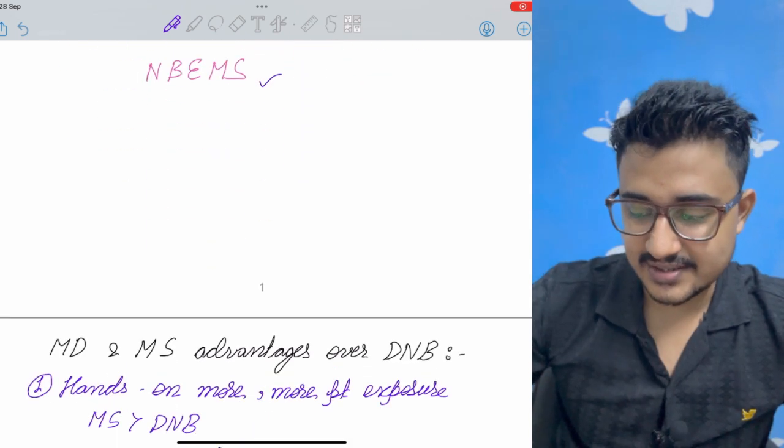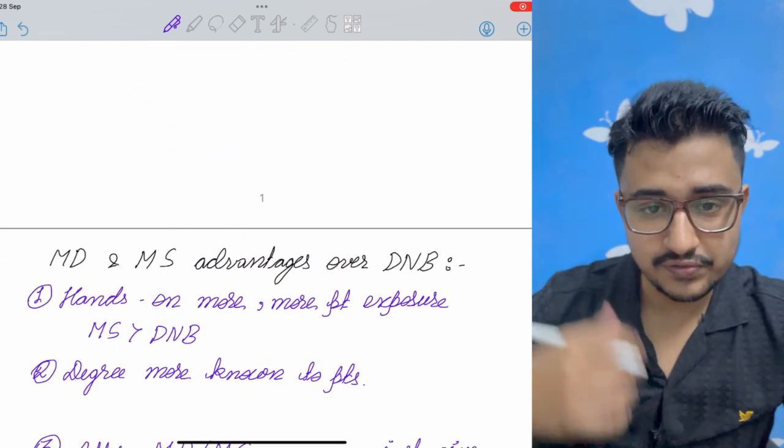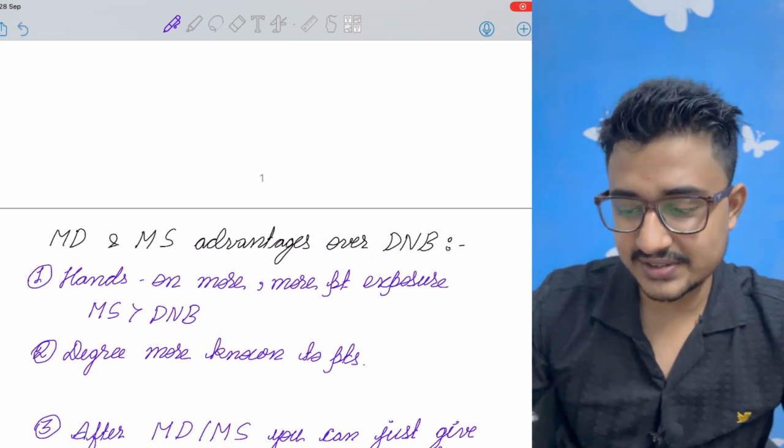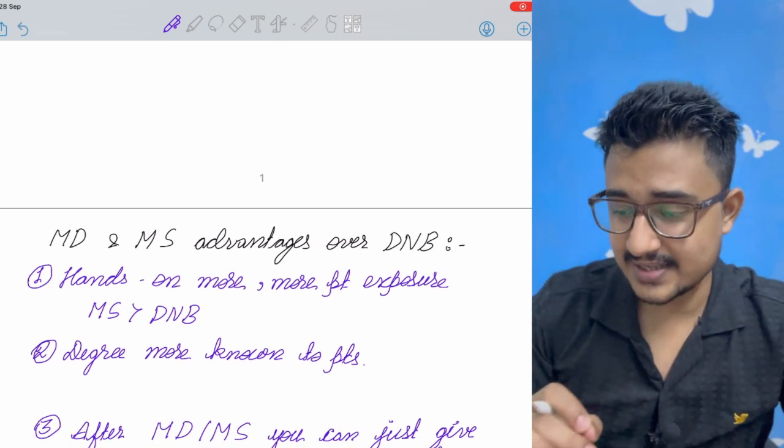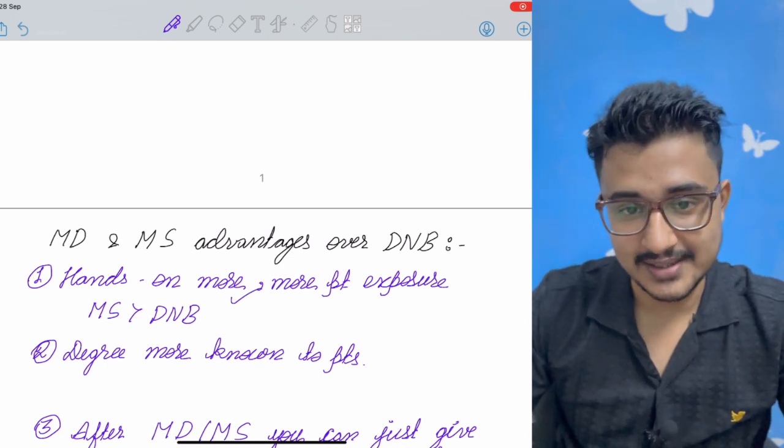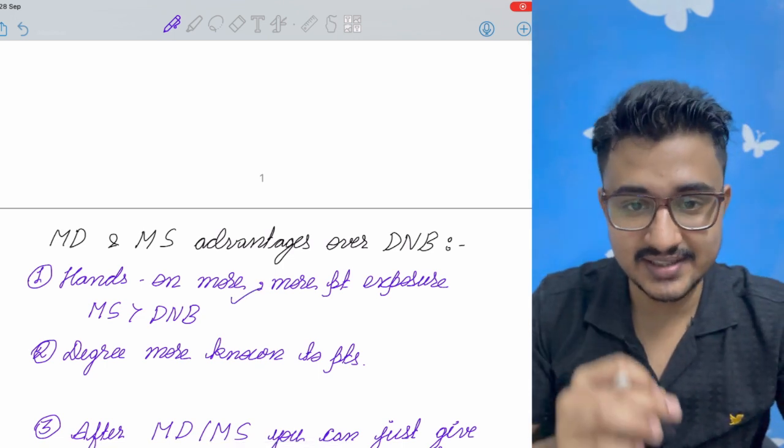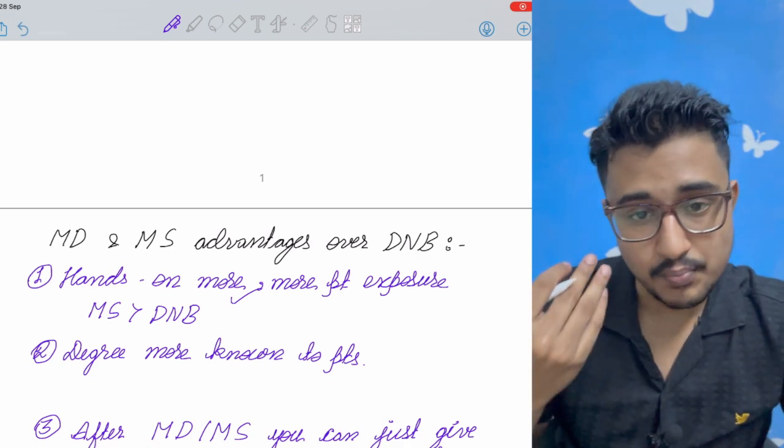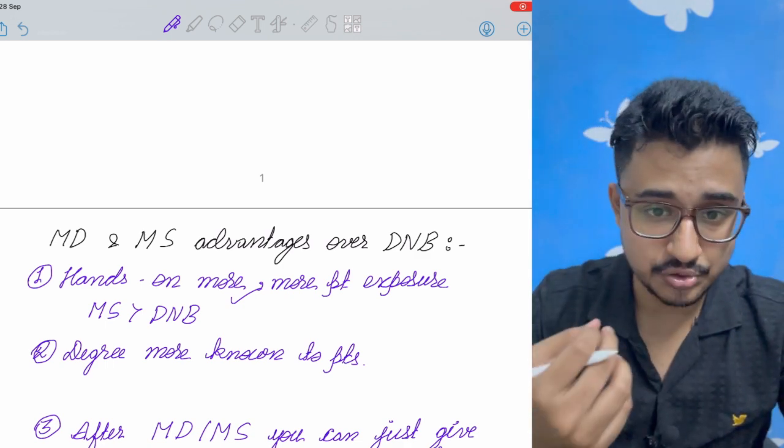First let's come to the advantages of MD and MS over DNB. So the first advantage that MD and MS has over DNB is that it has more hands-on. The medical colleges are the training grounds for the residents. So you get more patient exposure and the hands-on is also more.